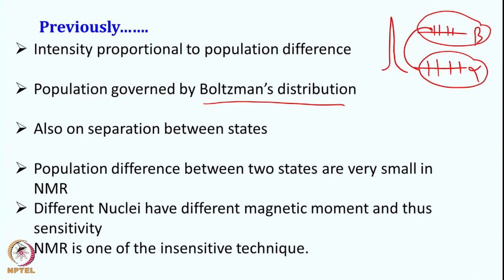This population is governed by Boltzmann distribution. Boltzmann dictates how many spins are going to be in the lower state and how many spins are going to be in the higher state. Since the separation between these states is minimal, in NMR the difference between the ground state and the excited state is not much. Therefore, NMR is one of the insensitive techniques. To give you an idea of how insensitive it is, if you record a fluorescence spectrum for a biomolecule — say probing a tryptophan, a commonly used intrinsic fluorophore — you need a maximum of 10 or 20 micromolar of sample. However, for getting a decent NMR spectrum for a biomolecule, you need a few hundred micromolar, say 500 micromolar to 1 millimolar for doing a 1D spectrum. Therefore, NMR is one of the insensitive techniques that we have.